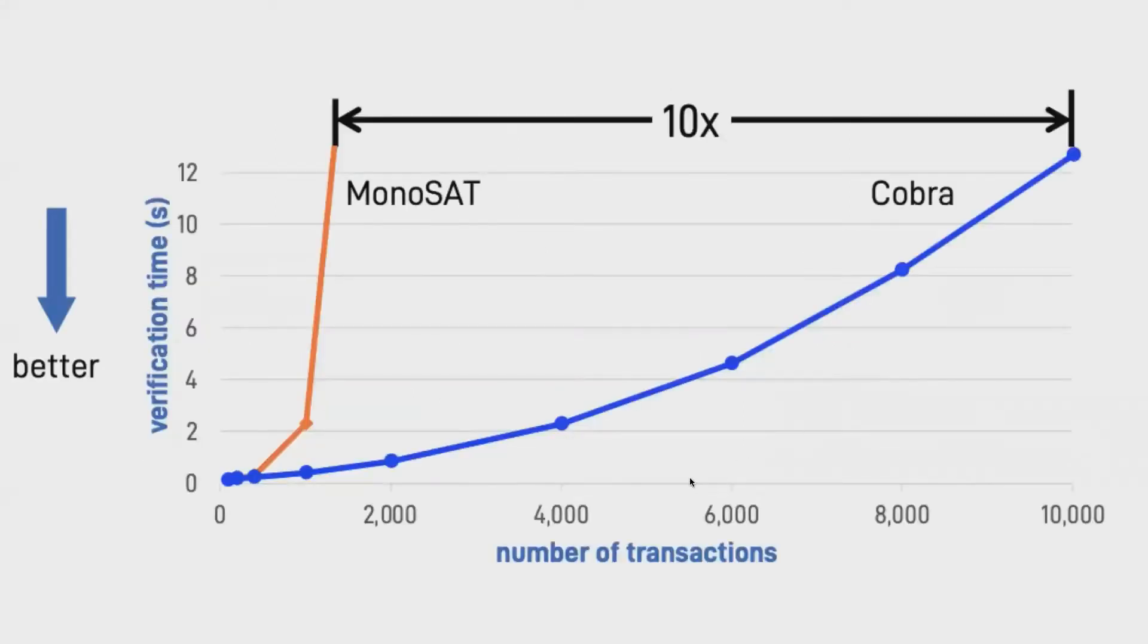The next graph compares Cobra's performance against the simple monosat solver on 10K transactions, with eight operations per transaction and 24 concurrent clients. As we can expect, due to the pruning capabilities of Cobra, it vastly outperforms the monosat solver, the reduction in problem space size really helps it.